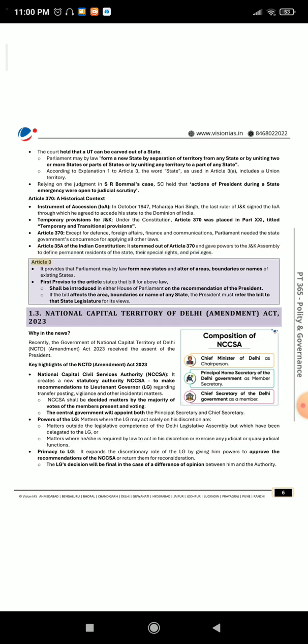Article 3: It provides that Parliament may by law form new states and alter the areas, boundaries, or names of existing states. The first proviso to the article states that a bill for the above law shall be introduced in either house of Parliament on the recommendation of the President. If the bill affects the area, boundaries, or name of any state, the President must refer the bill to that state legislature for its views.